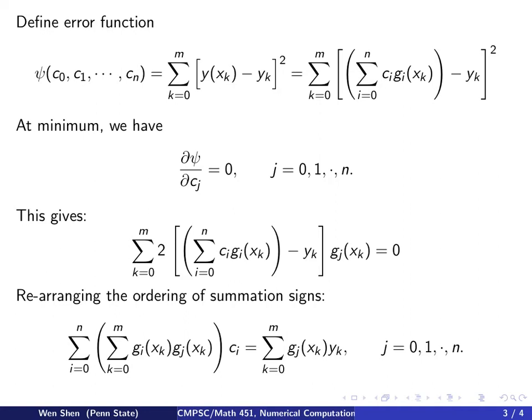We can rearrange the ordering of the summation signs, and also move this term, y_k times g_j at x_k, to the right-hand side.